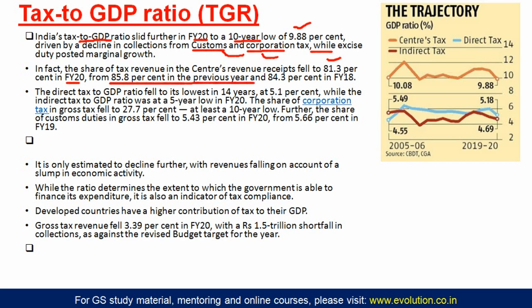The Centre's tax revenue receipts fell to 81.3 percent in financial year 2020 from 85.8 percent in the previous year and 84.3 percent in financial year 2018. The direct tax-to-GDP ratio fell to its lowest in 14 years at 5.1 percent. The indirect tax-to-GDP ratio also fell to a 5-year low in financial year 2020. Corporation tax is mainly responsible, falling to a 10-year low of 27.7 percent.